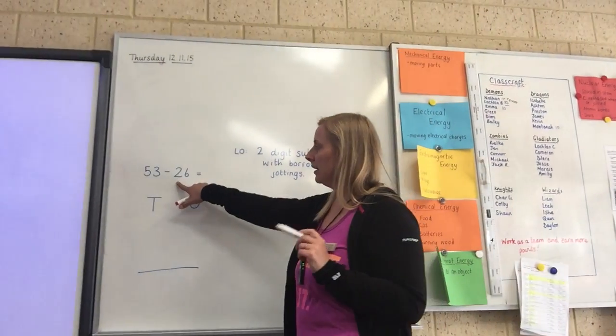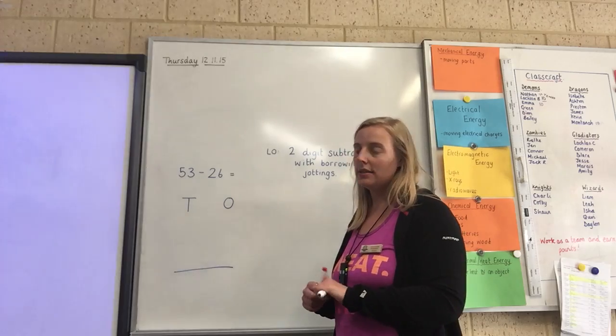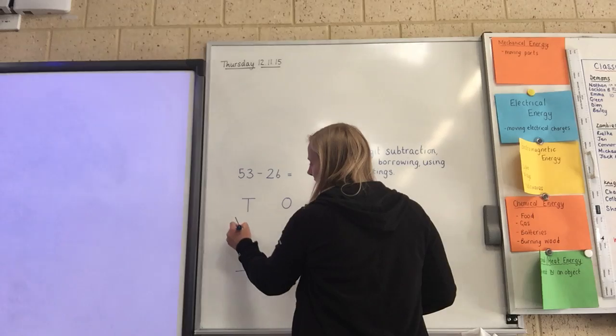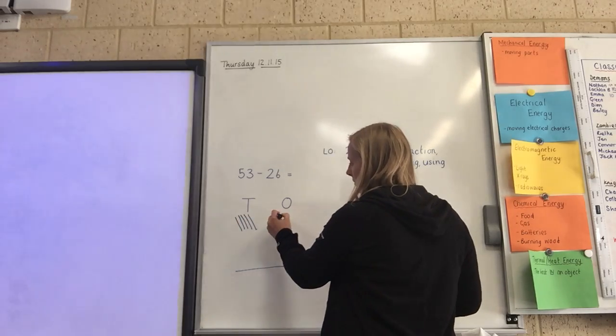Our two-digit, take away two-digit subtraction calculation is here, 53 take away 26. First thing we need to do is to put our jottings under the correct columns. So 53 is five tens, so that's five rods, three wands.